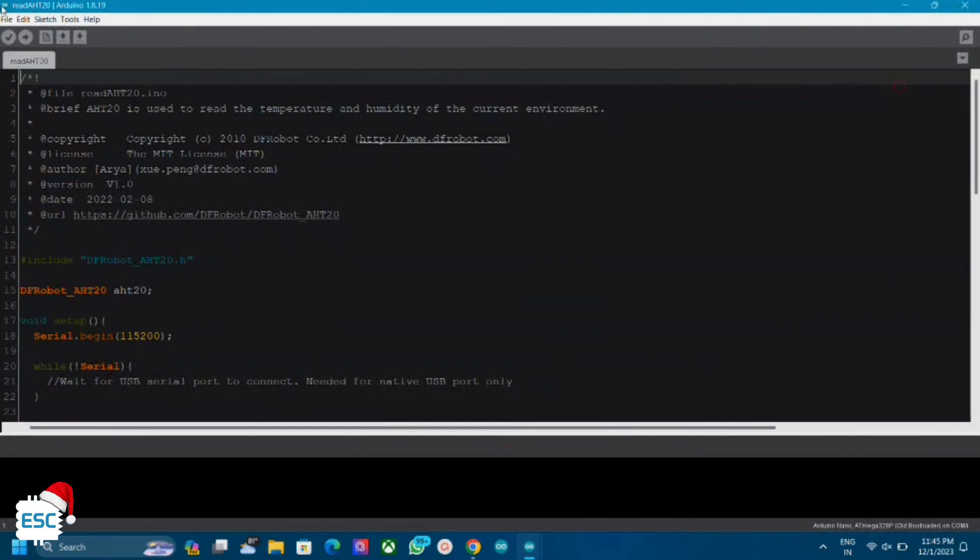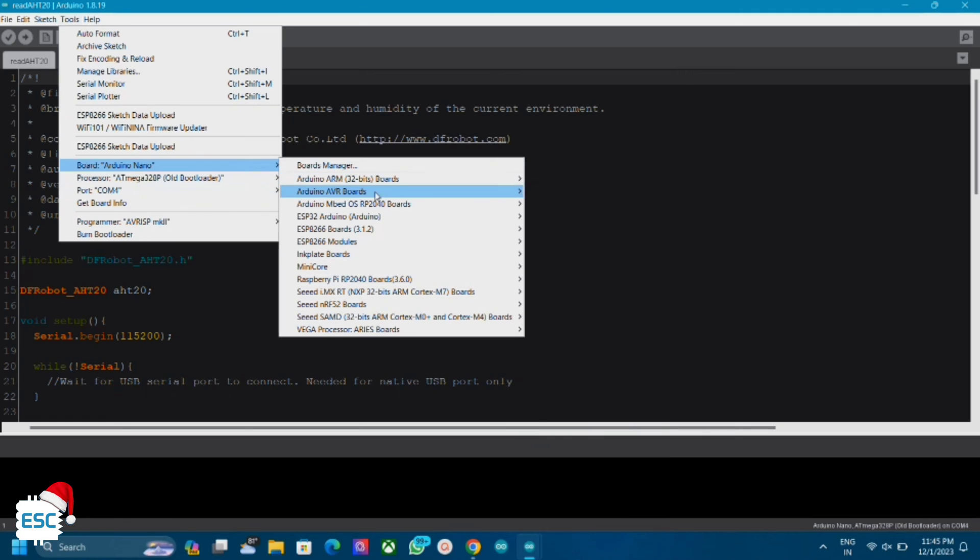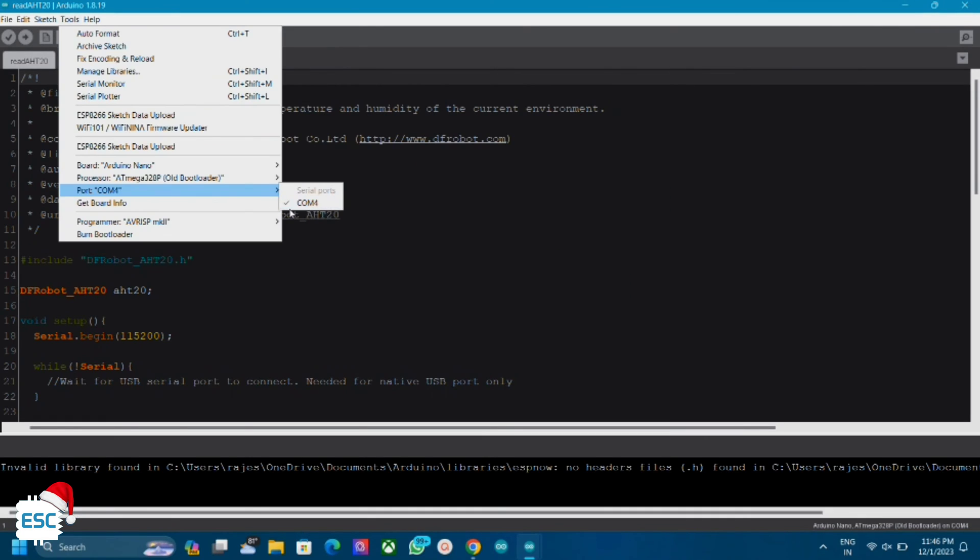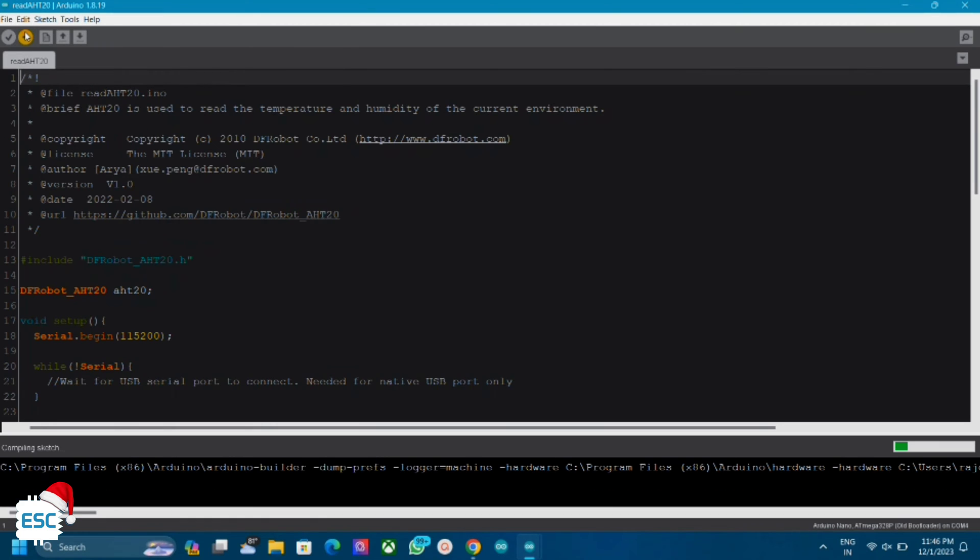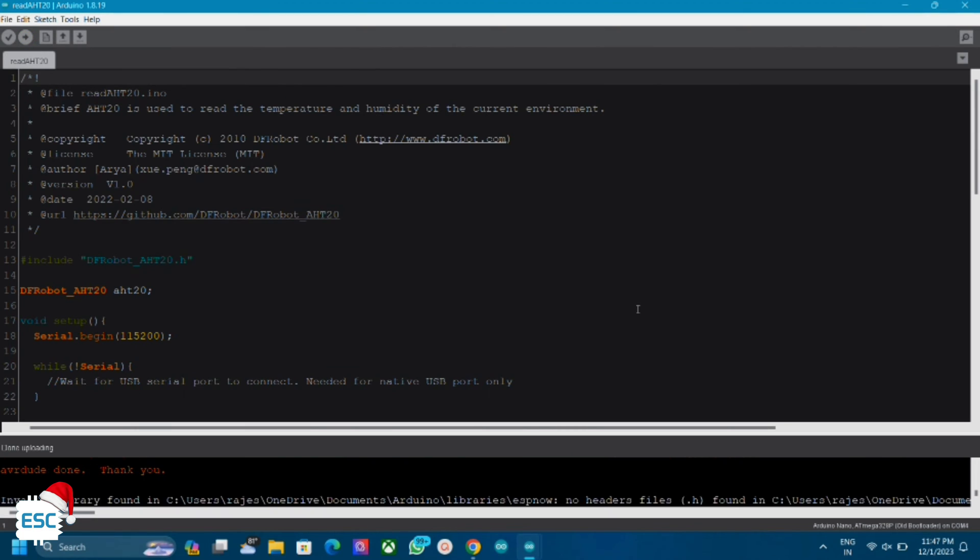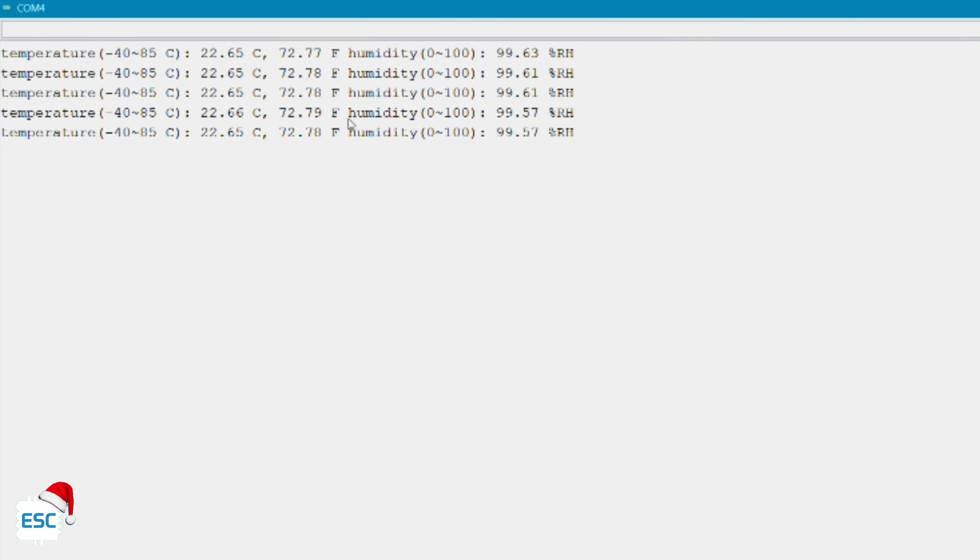The code is very similar to DHT library, nothing to explain here. Now select the board and port, then upload. Now you can see the reading in the serial monitor. Everything works.